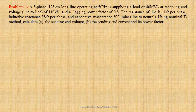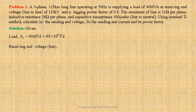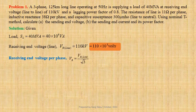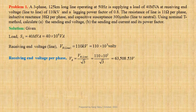Let us first write down the given data. Load SL equals 40 megavolt ampere, that is 40×10⁶ volt ampere. Line-to-line receiving end voltage VR_line equals 110 kilovolts, that is 110×10³ volts. For a star-connected system, receiving end voltage per phase VR equals VR_line divided by root 3, that is 110×10³ divided by root 3, which gives us 63,508.53 volts. Given load power factor cos φL equals 0.8 lagging.